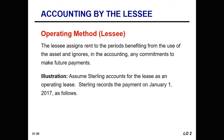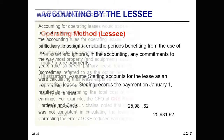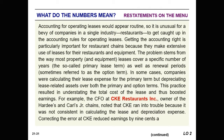Assuming Sterling accounts for the lease as an operating lease, the payment on January 1, 2017 would simply be rent expense of $25,981.62 and cash of $25,981.62. Obviously, accounting for operating leases is much more simple. It's not unusual that companies in specific industries like to use operating lease accounting, but getting the accounting right is really important — not just for restaurant chains but for anybody who makes extensive use of leases.